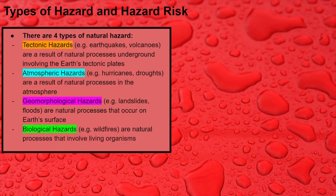So, types of hazards. There are four types of natural hazards you really need to know about. Tectonic hazards, which we'll look at in more detail later, are a result of natural processes underground involving the Earth's tectonic plates — any seismic activity that has the potential to harm people, so earthquakes and volcanoes. Atmospheric hazards, also covered in more detail later, are a result of processes in the atmosphere — so hurricanes and droughts.